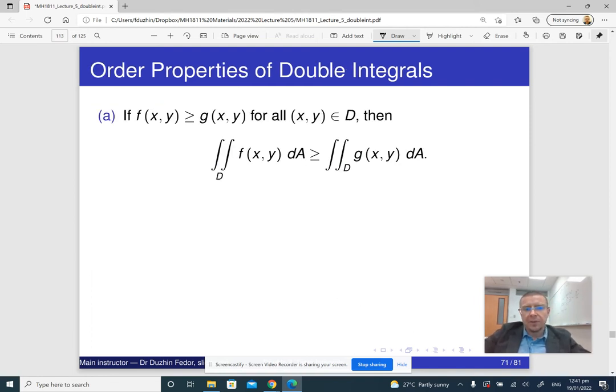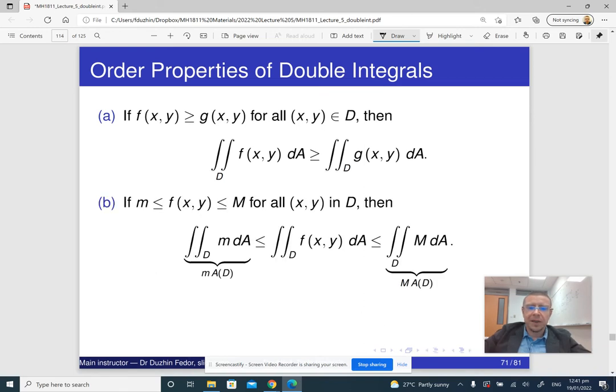So if f is bigger than g, then the integral of f is going to be bigger than the integral of g. It's pretty simple. And if f can be estimated by two constants, then basically we can just apply part a and evaluate this. So that's really it.